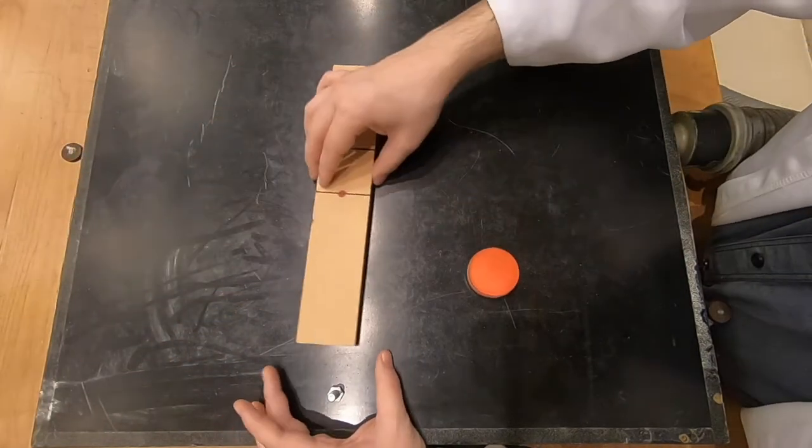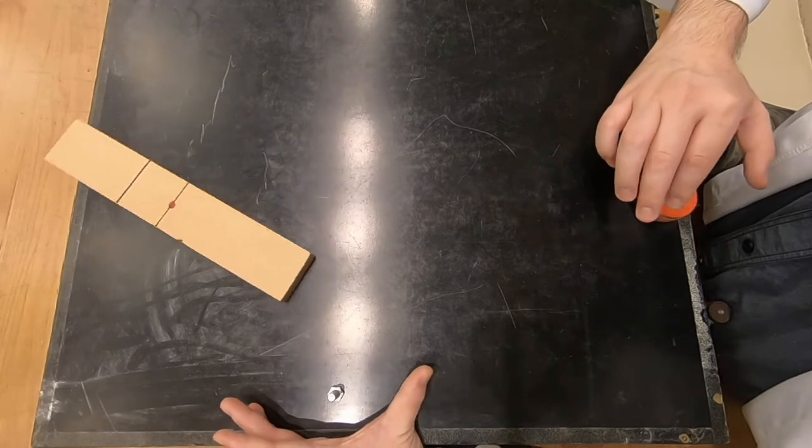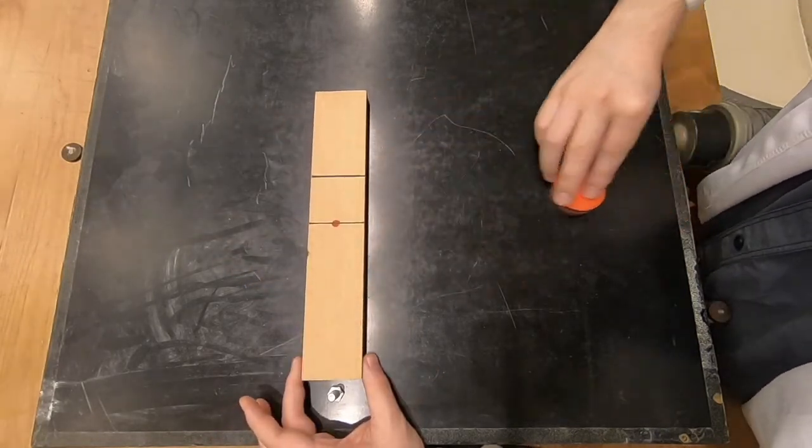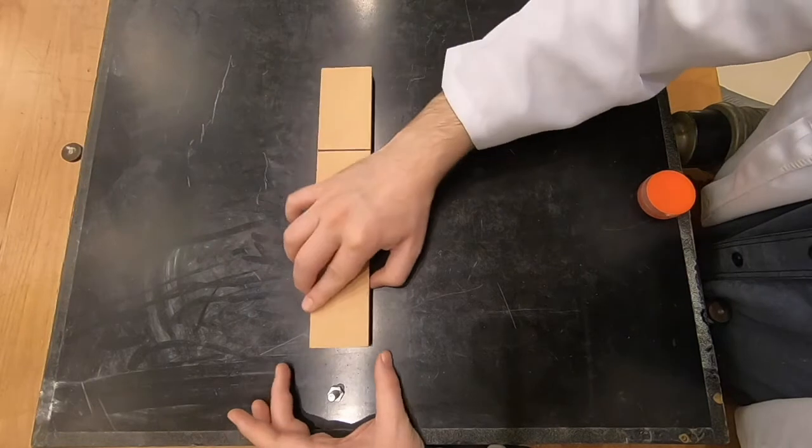A collision at two thirds of the length, the length of the equivalent simple pendulum, the far point doesn't move instantaneously. The rod rotates about that point, like a pendulum.